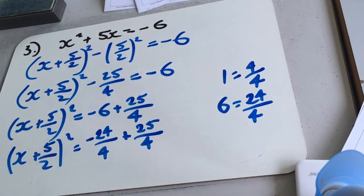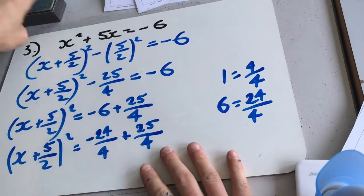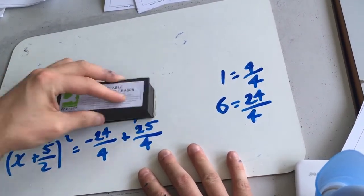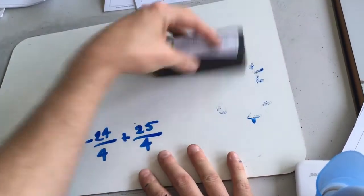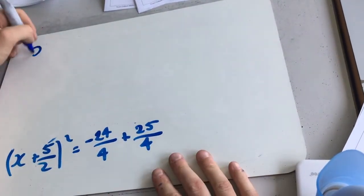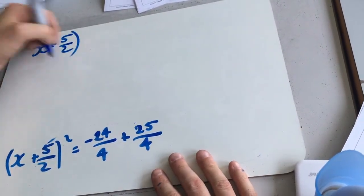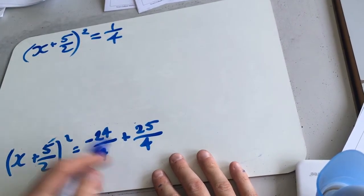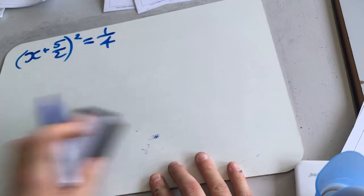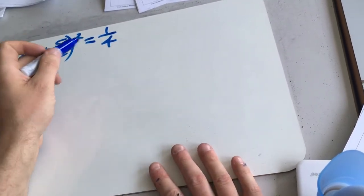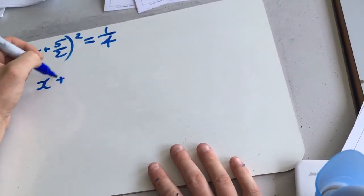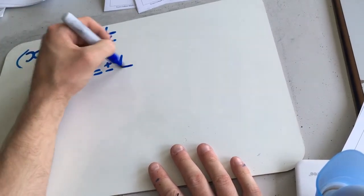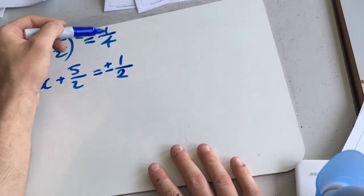So I need a bit more space. Let's get rid of all this. So we get x plus 5 over 2 squared equals 1 quarter. So now we just need to solve this. We're going to square root both sides again. So x plus 5 over 2 equals plus or minus 1 half, because we square root the top and square root the bottom.